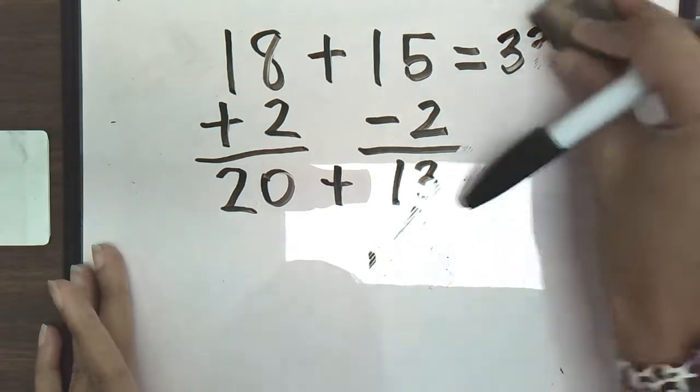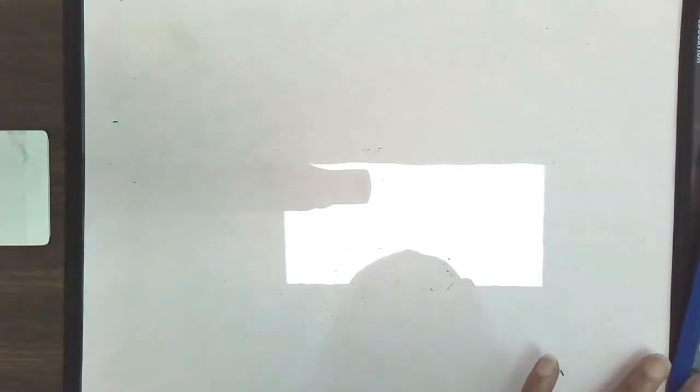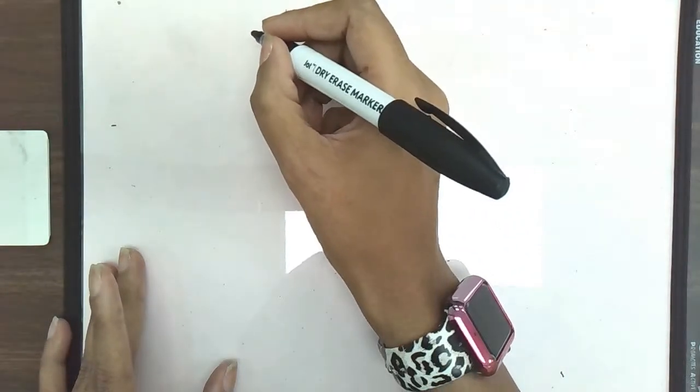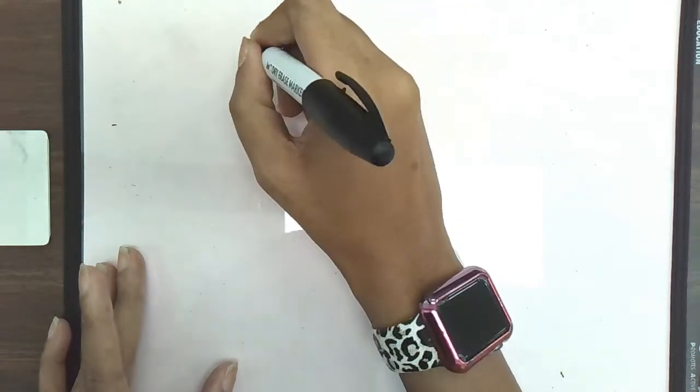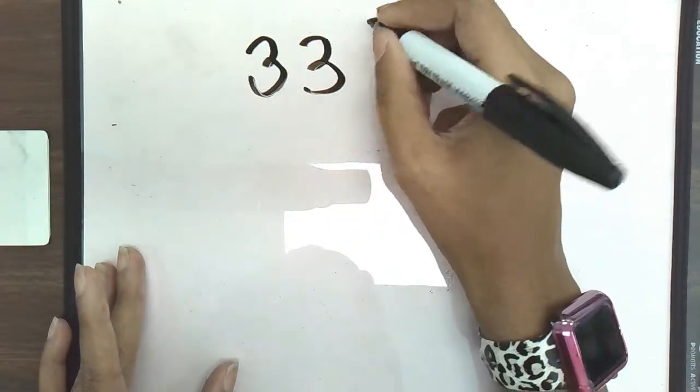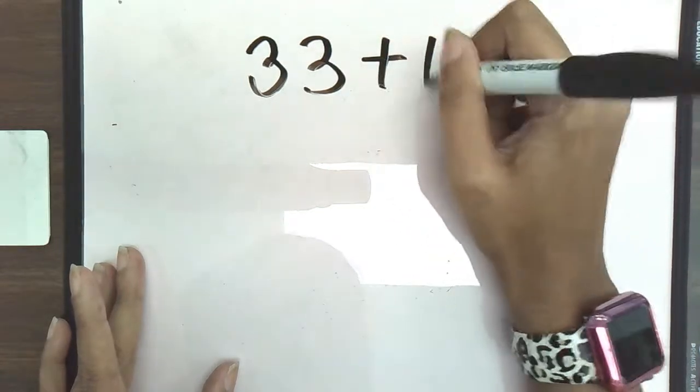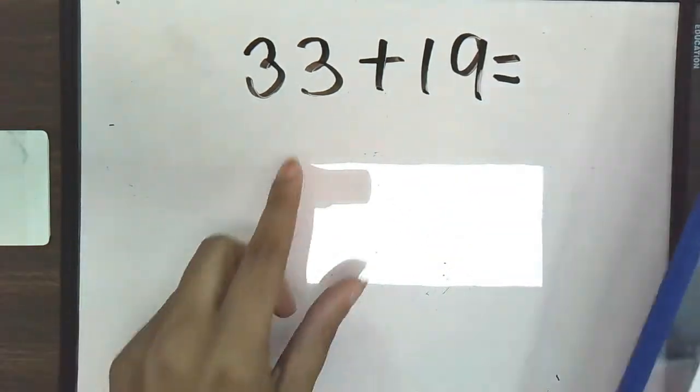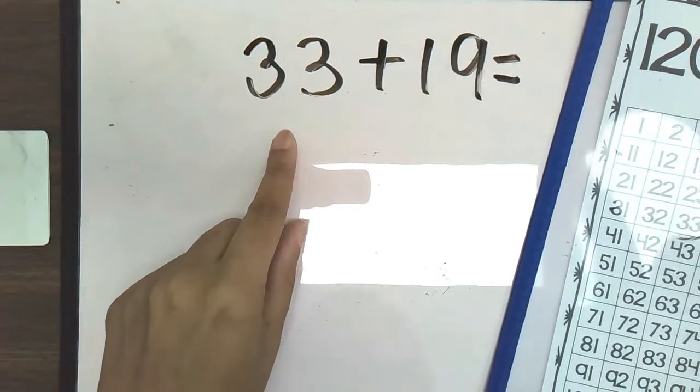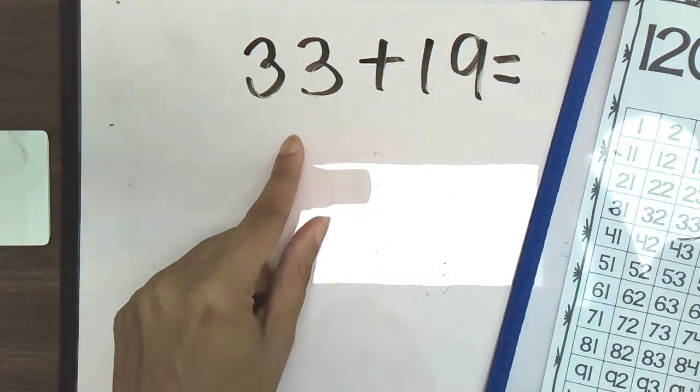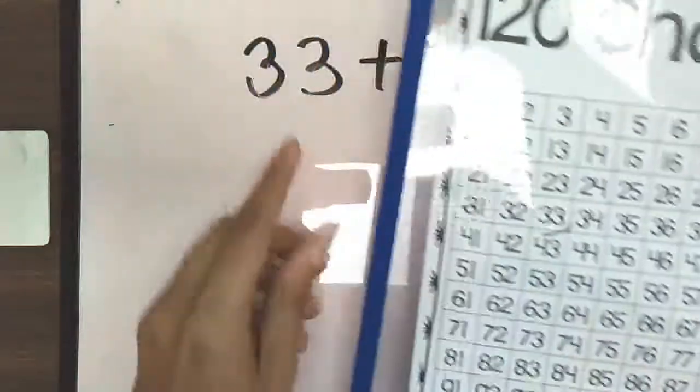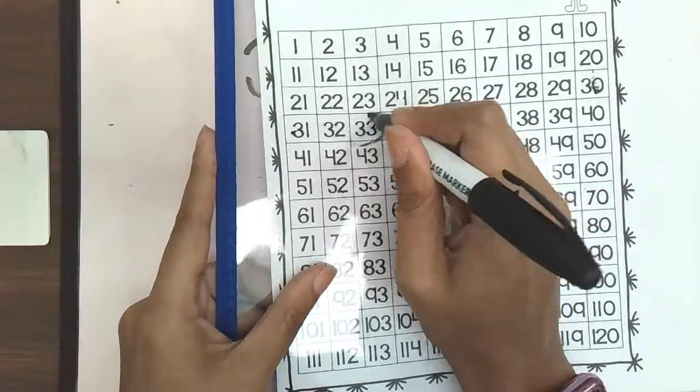So let me show you another example. Our next example is going to be 33 plus 19. So again, the same theory here. We're looking at both of our numbers and we're trying to see which one of these numbers, which one of these addends is going to be closest to a 10. If we're looking at our 10s, we have the numbers 33 and 19. So we're going to find 33. Here's 33 here. And we're going to find the number 19.